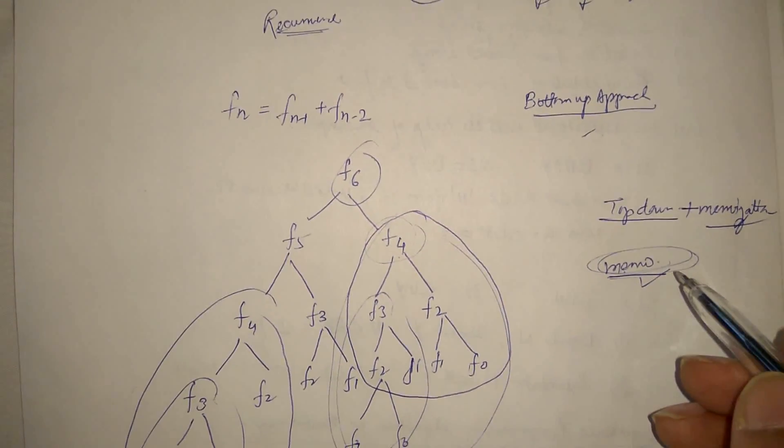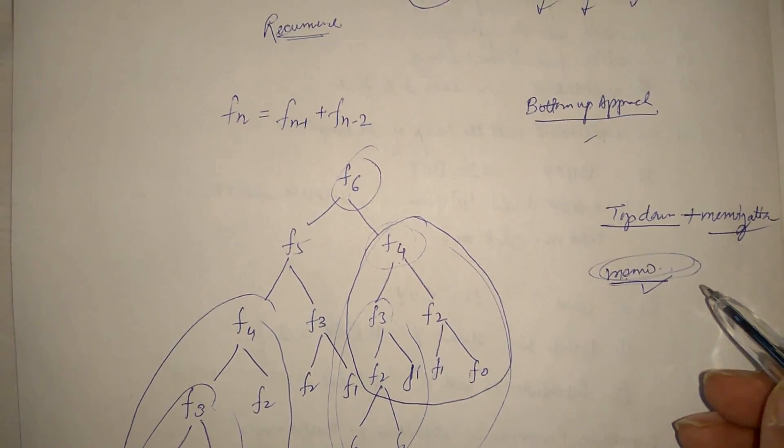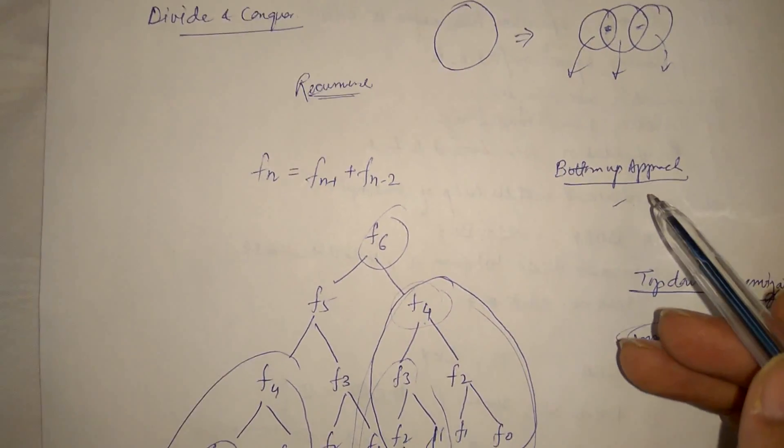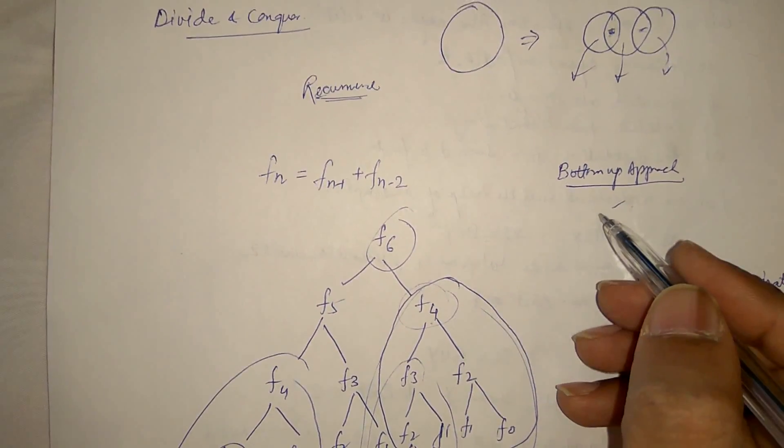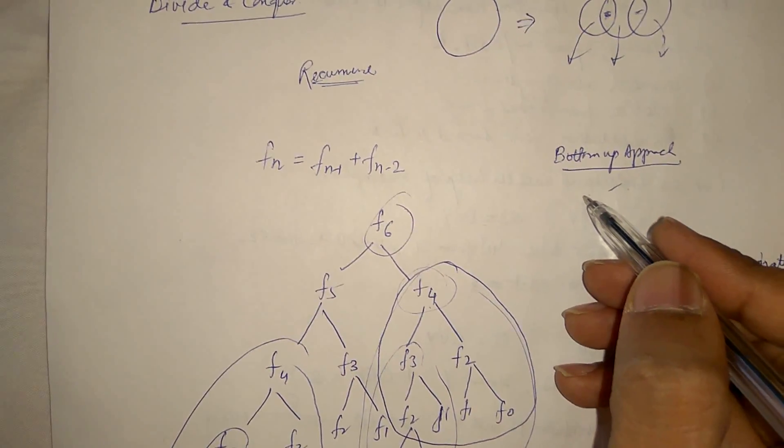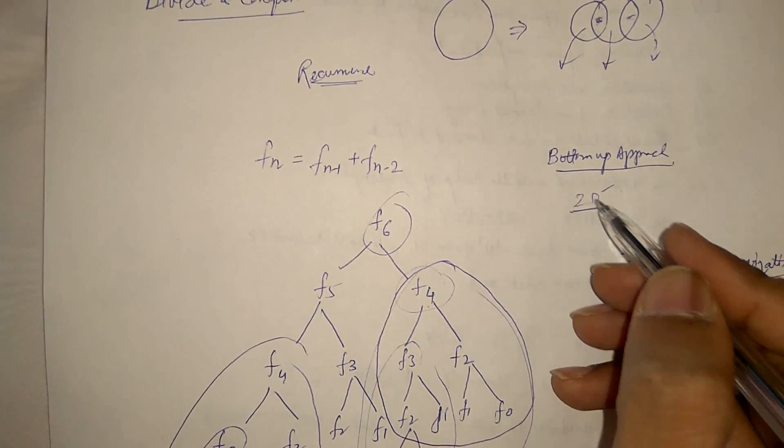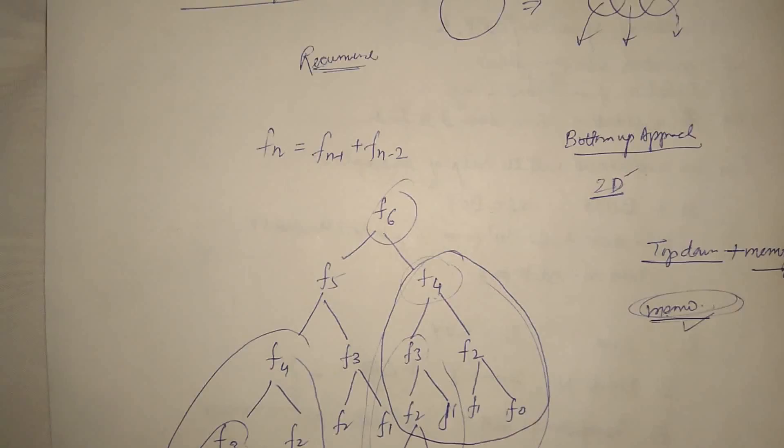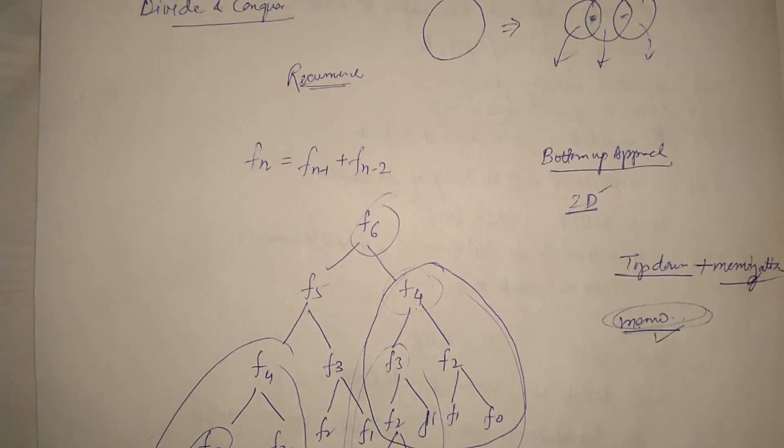In top down approach, we mainly use array or hash table to store result. So for memo, we use data structure, either array or hash table. While in case of bottom up approach, we generally take tables. Mostly functions use 2D tables.